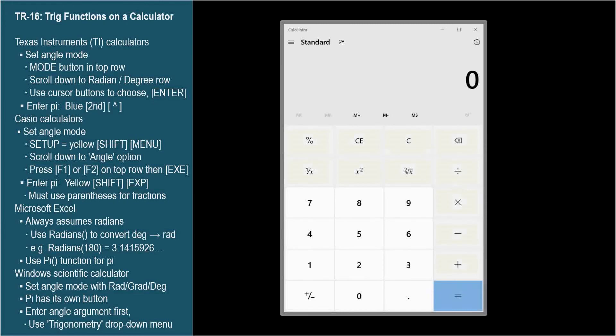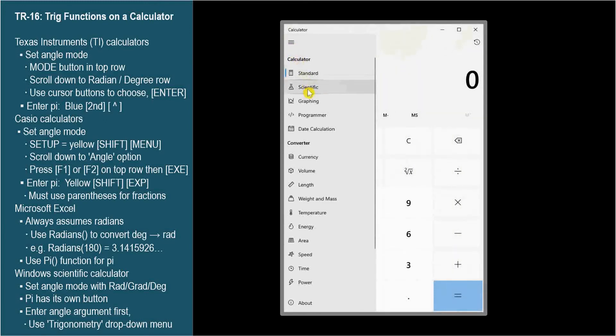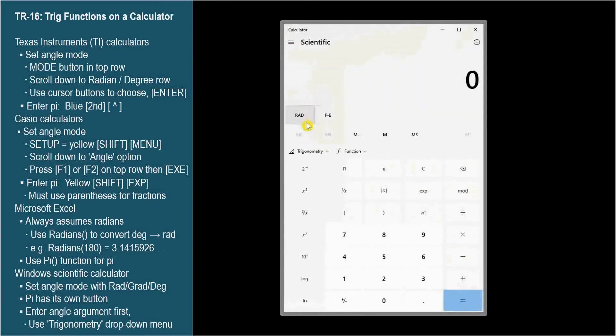For the calculator built into Windows, make sure it's in scientific mode by clicking these three lines and choosing scientific. Degree and radian mode are set with this button. Click the button to cycle through the choices. We'll start with degree mode.